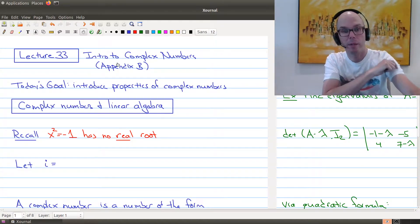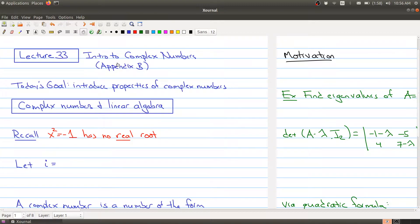We first start with a fact from calculus that x squared equals negative one has no root, because whenever you take a number, a real number, and you square it, you either get zero or a positive number.